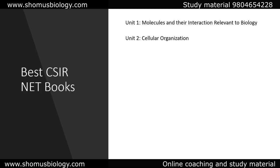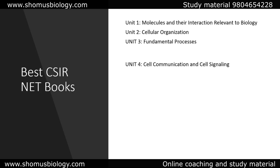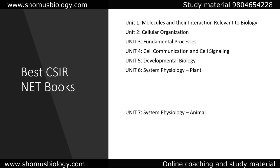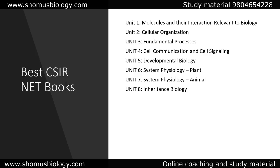There are 13 different units consisting of 13 different topics. Unit 1 is molecules and their interaction relevant to biology, which is known as biochemistry. Unit 2 is cell biology. Unit 3 is molecular biology. Unit 4 is cell communication and cell signaling, cancer biology, and immunology. Unit 5 is developmental biology. Unit 6 is plant physiology. Unit 7 is animal system physiology, particularly human physiology. Unit 8 is inheritance biology or genetics. Unit 9 is diversity of life forms, that is classification and zoology. Unit 10 is ecological principles.